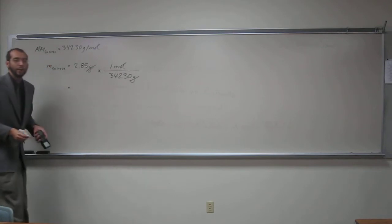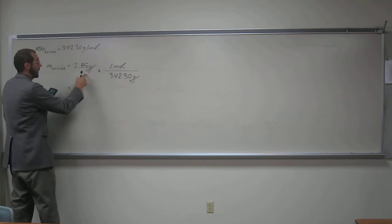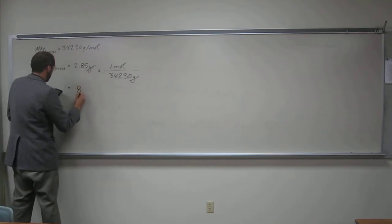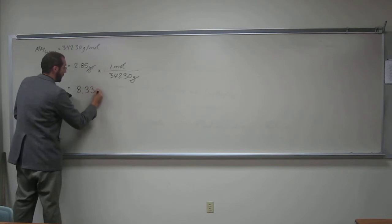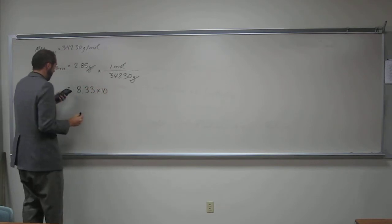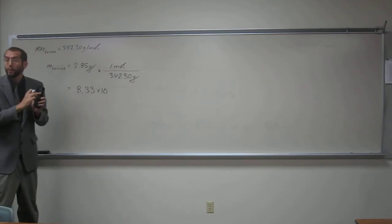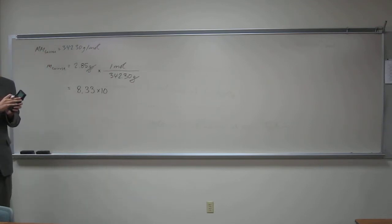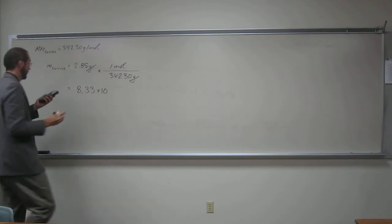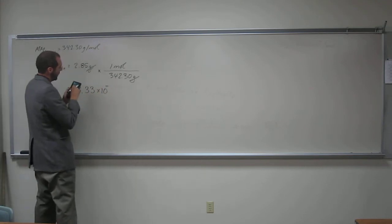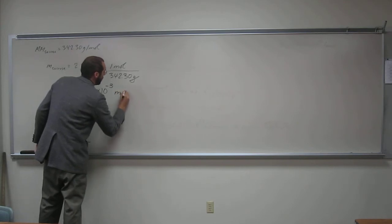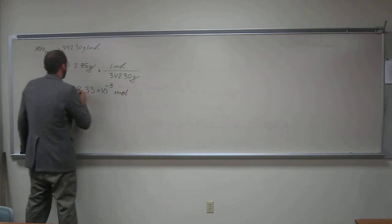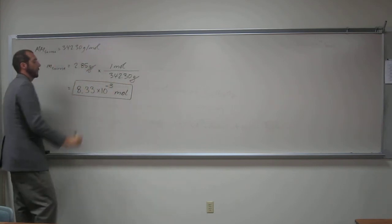So let's do this, let's write it in scientific notation, okay? So to 3 sig figs, 8.33 times 10, so that's less than 1, so it's going to be a negative exponent. So the negative 1, 2, 3 moles of sucrose, everybody okay with that one?